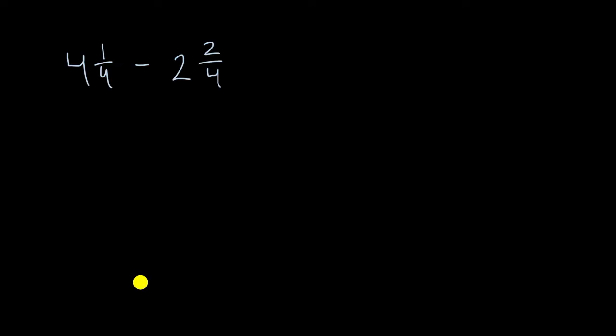All right, so the first thing that you might try to do is rewrite this as four and one-fourth minus two and two-fourths. And the reason why it's useful to write it this way is we could say each of these mixed numbers have a whole number part and then they have a fractional part. And so I could try to subtract the fractional part from the fractional part and then the whole number part from the whole number part. And that will often work.